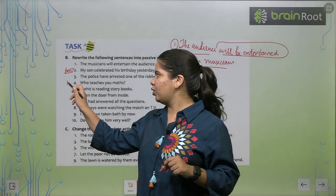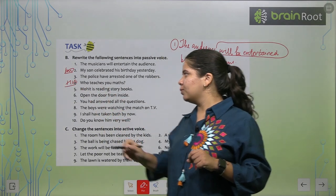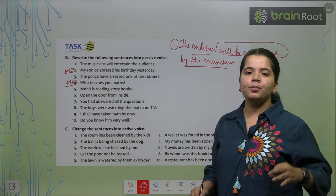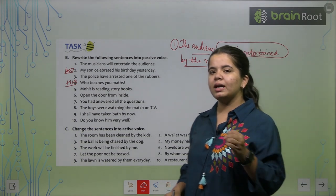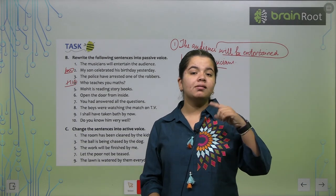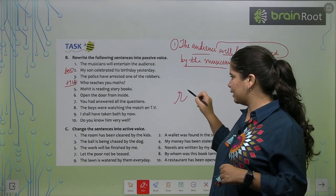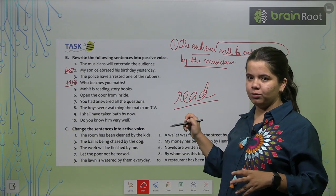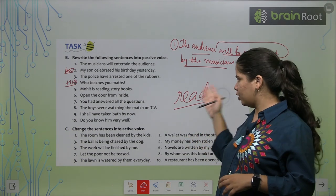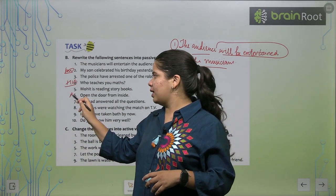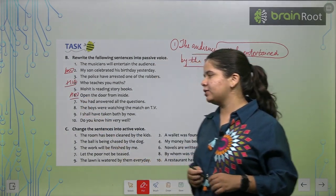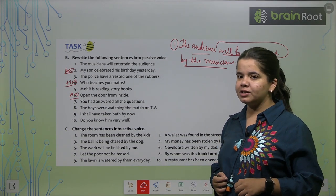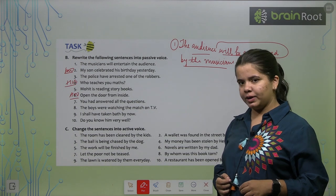Fourth one is again your homework. Fifth one, let's see. Mohit is reading story books. Story books are being read by Mohit. Repeating, story books are being read by Mohit. What is the spelling of read? R-E-A-D. We call this both read and red. You have to remember this. Next, sixth one is again your homework. Seventh we will do. You had answered all the questions. All the questions have been answered by you.